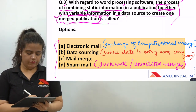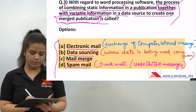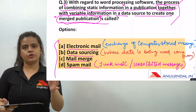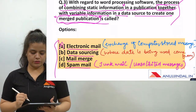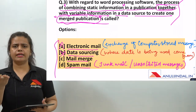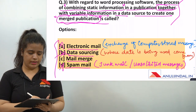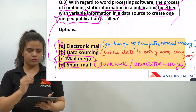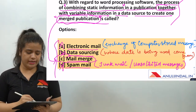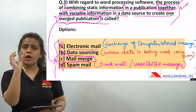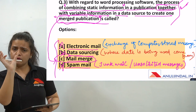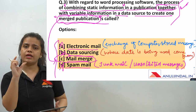The options are: electronic mail, data sourcing, mail merge, and spam mail. Electronic mail is the exchange of computer-stored messages — that doesn't fit. Data sourcing refers to where data comes from — not this. Spam mail is junk or unsolicited messages — not this. The answer is mail merge. Notice how 'merged publication' and 'mail merge' are similar — sometimes the definition and the term directly match, so use the elimination method and read carefully.